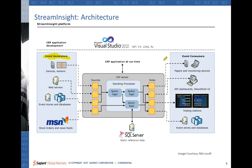You have event generators on the left-hand side and event consumers on the right-hand side. Some event generators include devices, sensors, web servers, and event stores — some using a pull model and some using a push model. The events in these event generators have their own structure — they could have a set of fields and data types, and they may also have a temporal characteristic. For example, a sensor could generate an event valid only at a specific point in time.